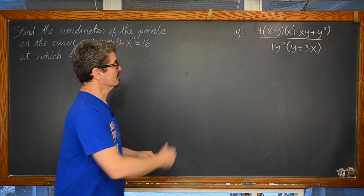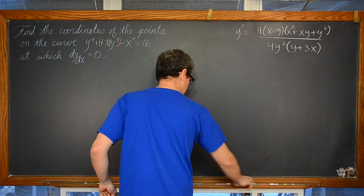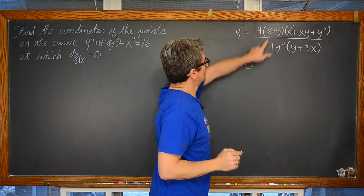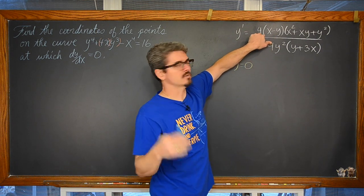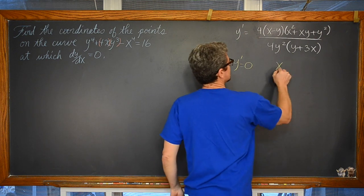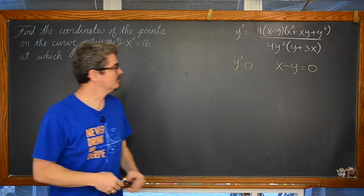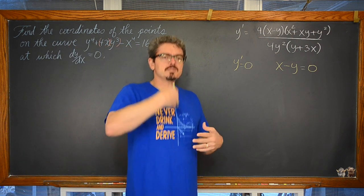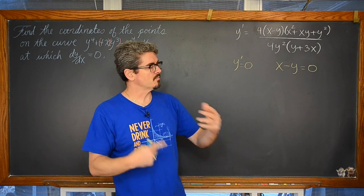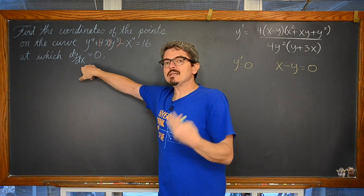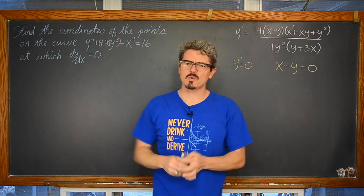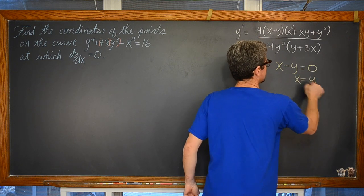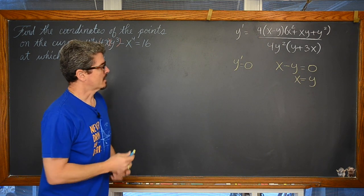Looking at the numerator, we have a factor of (x minus y). When is x minus y equal to zero? That is what makes this question interesting — you are not going to find an immediate x value here. This is going to be equal to zero when x is equal to y. We will use that substitution in a moment.